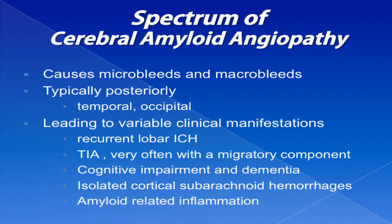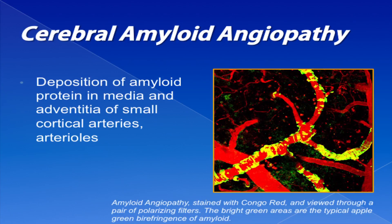In amyloid angiopathy, you get deposition of amyloid protein in the arteries over the convexities. Instead of breaking and bleeding into the brain parenchyma, in a cortical convexity subarachnoid hemorrhage the bleeding is just into the subarachnoid space.